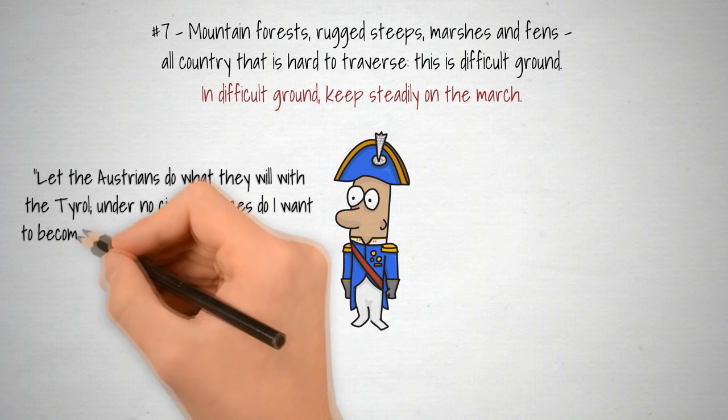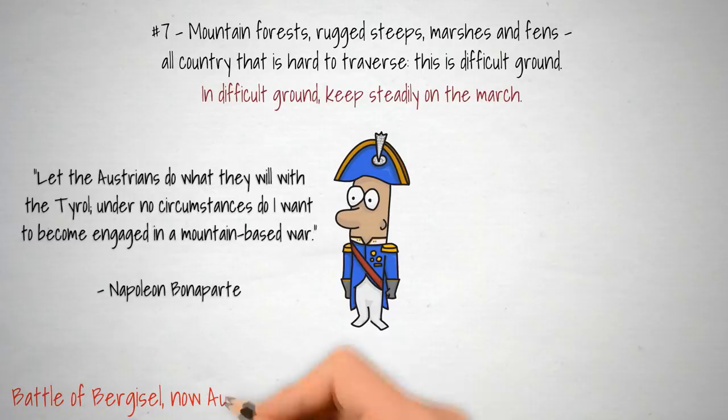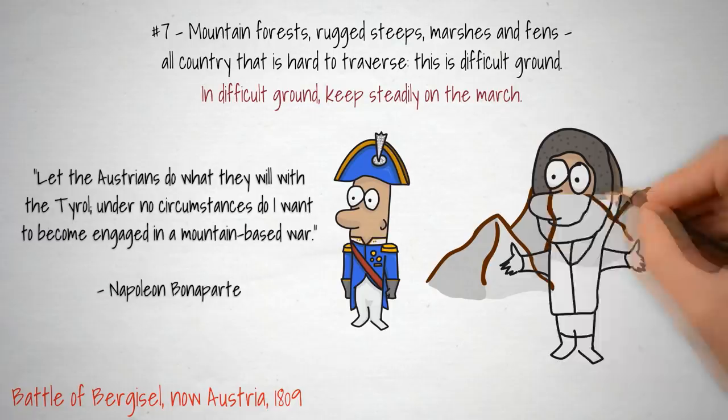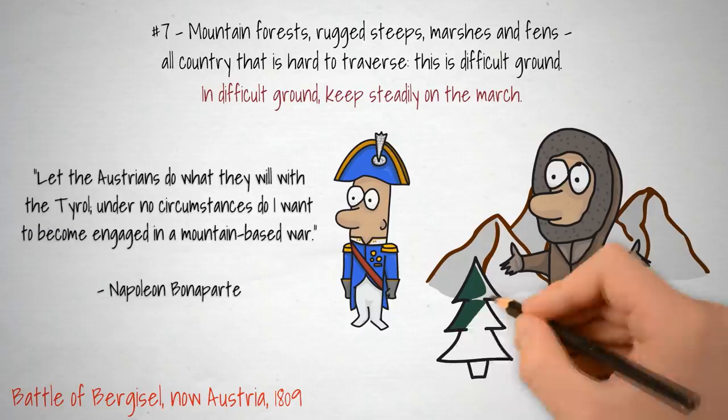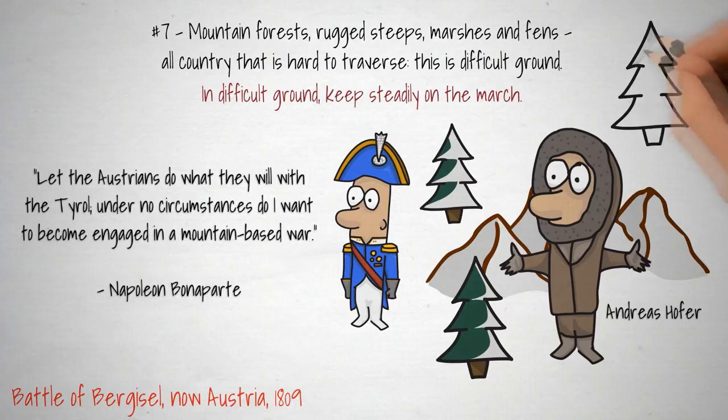Andreas Hofer led a rebellion of peasants against the occupation of their homeland by French and Bavarian troops. The peasants employed guerrilla tactics up in the mountains by being highly mobile and using sharpshooting skills to pick off their opponents. The soldiers were used to fighting on a battlefield and weren't familiar with the terrain. The peasants utilised the difficult ground by creating artificial avalanches, resulting in thousands of soldiers killed and captured weapons that would supply the rebels for months.